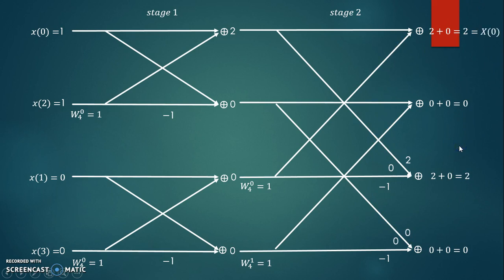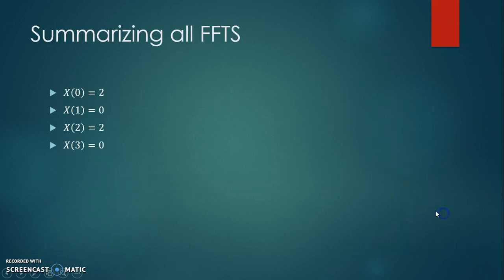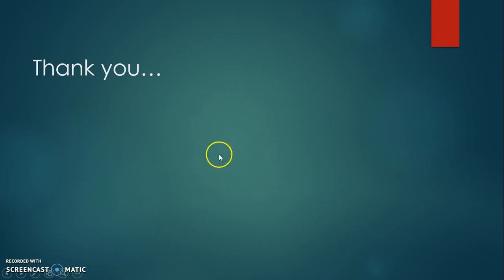These FFTs are in natural sequence: X(0) = 2, X(1) = 0, X(2) = 2, X(3) = 0. We have determined all the FFTs of the given sequence using the four-point DIT-FFT algorithm. Thank you.